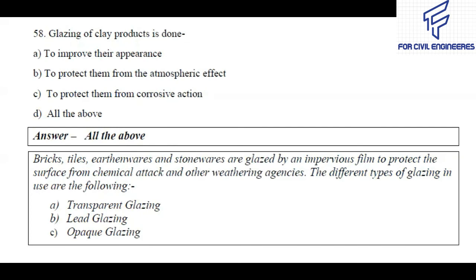Question number 58: Glazing of clay products is done to — improve their appearance, protect them from atmospheric effect, protect them from corrosive action, or all of the above? The right answer is all of the above. Bricks, tiles, earthenware, and stoneware are glazed by an impervious glaze to protect the surfaces from chemical attack and other weathering agencies. The different types of glazing are transparent glazing, lead glazing, and opaque glazing.